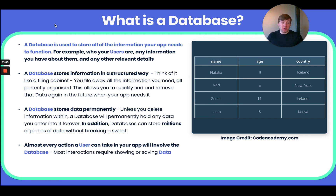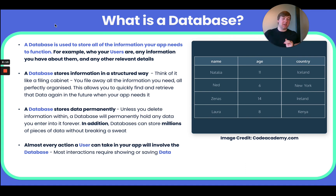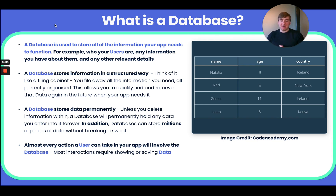Almost every action a user can take is going to involve your database. When you log on to an app and it shows you relevant details — on Airbnb you'll see potential apartments, on Uber you'll see where all the cars are — all of that information is initially stored in a database. Almost every button a user touches or piece of text they enter is either going to pull information from the database, put information into the database, or both.